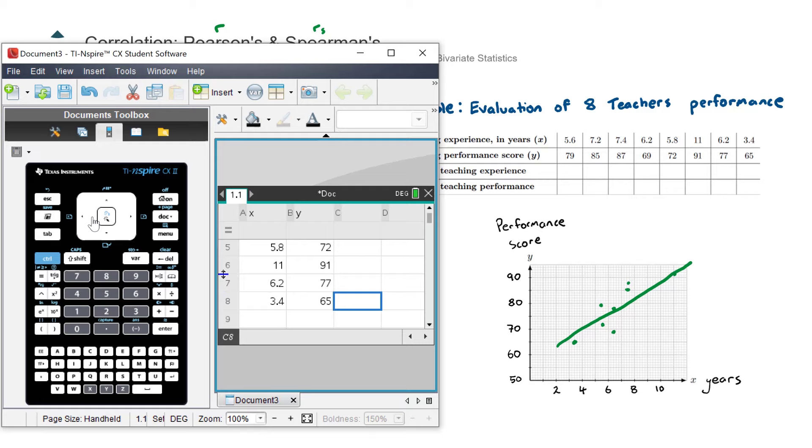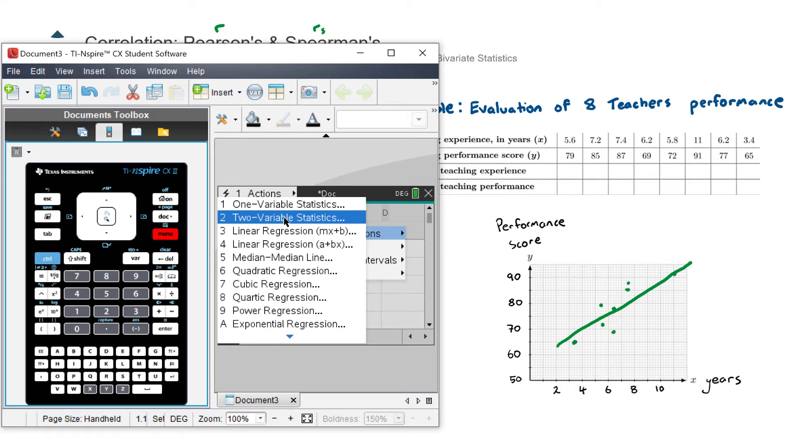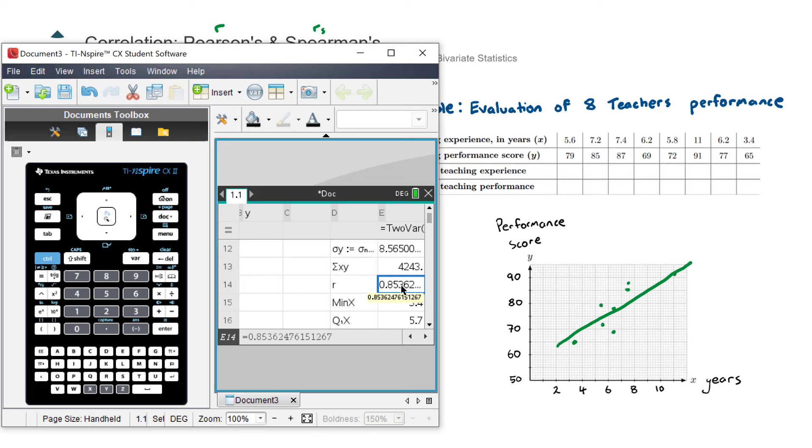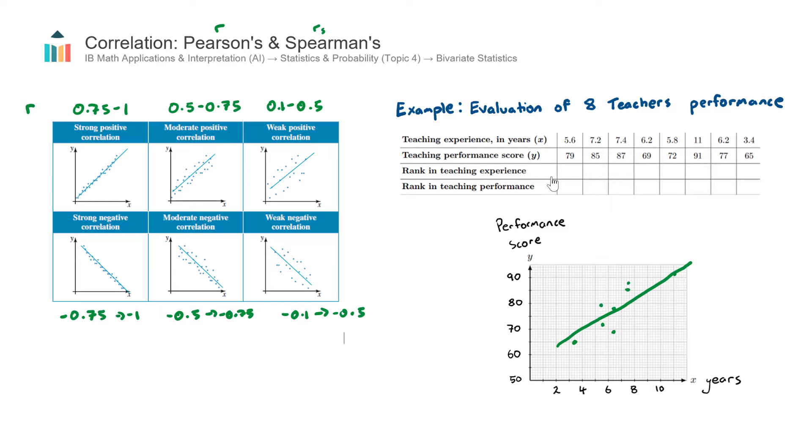Okay, there are the eight data points entered. Let's go to the top of the next column and perform a two variable statistic calculation. So we go menu, number four, statistics, number one, stat calculations, and this number two here. Because we do have two variables here. Number of years teaching and teacher performance score. The X list, we select X for the first column. The Y list, we select Y. Hit OK. And if we scroll down, we get our R value down here. So our R value is 0.854 rounded to 3 sig fig. And you can see here that that would be described as strong positive correlation. So in other words, there is a strong positive relationship between the number of years a teacher has taught and their associated teacher performance score.